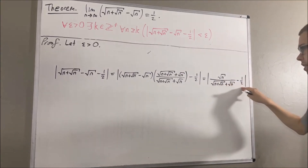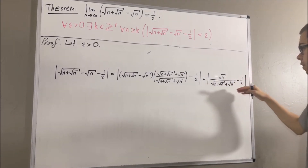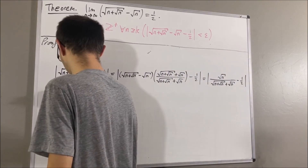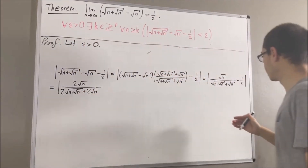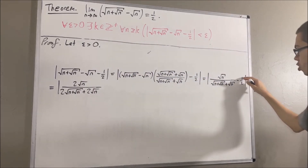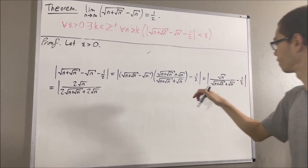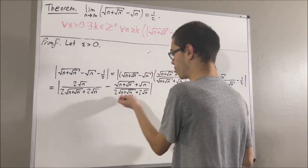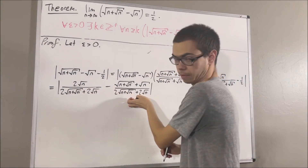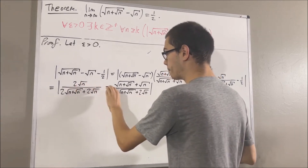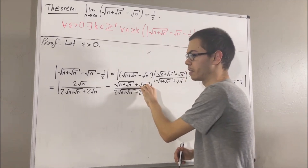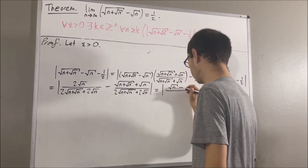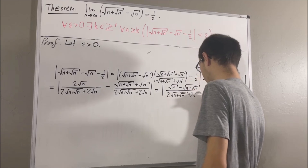Now, let's combine these two terms into a single fraction. To do that, let's first multiply both the numerator and denominator of this fraction by 2. So we get this. And then let's take one-half and multiply both the numerator and denominator by this expression. Now we have the same denominator, so we can combine these two into a single fraction. Notice we're going to be doing 2 times square root of n minus square root of n plus square root of n in the numerator.